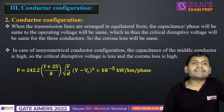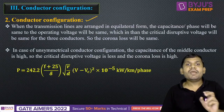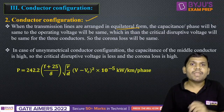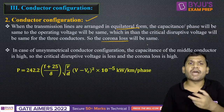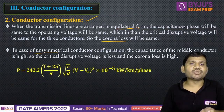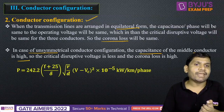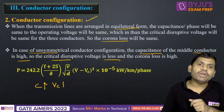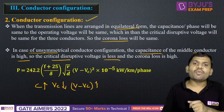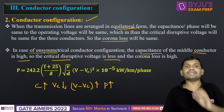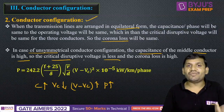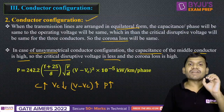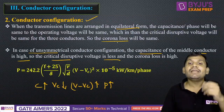One more important factor with respect to conductor configuration is the arrangement. For symmetrical (equilateral) configuration, there is no significant corona effect. But in unsymmetrical configuration, the capacitance of the middle conductor is very high, so the critical disruptive voltage is less. If the capacitance increases, Vc reduces, V minus Vc increases, and corona loss also increases. For unsymmetrical configuration, corona loss is more compared to symmetrical configuration.